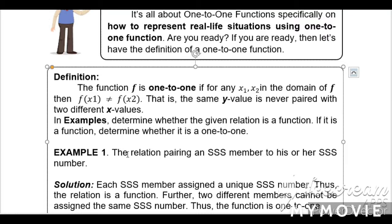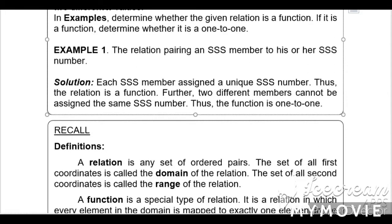Example number 1: the relation pairing an SSS member to his or her SSS number. Solution: each SSS member is assigned a unique SSS number — meaning one and only one. So one member has a corresponding unique SSS number. Thus the relation is a function. Further, two different members cannot be assigned the same SSS number. Thus the function is one-to-one.